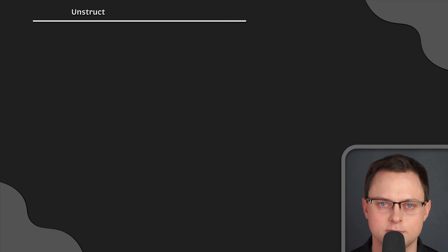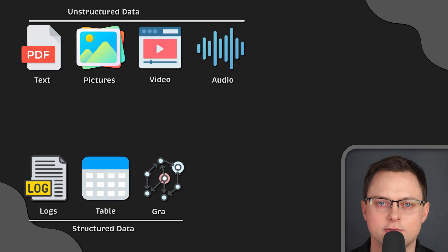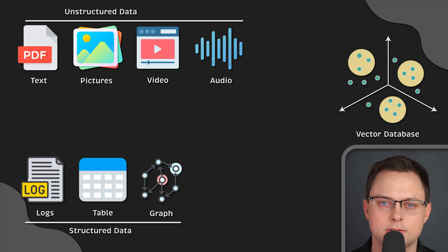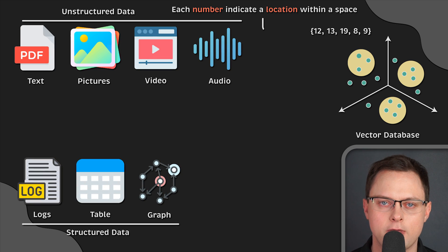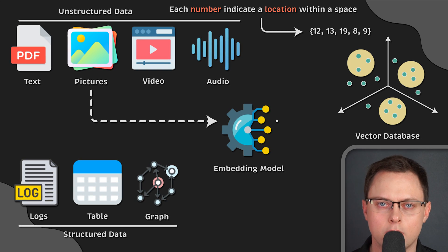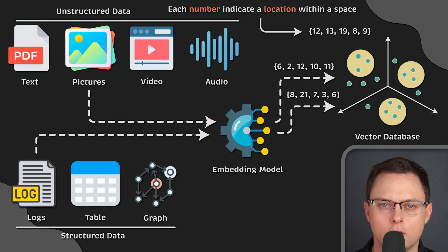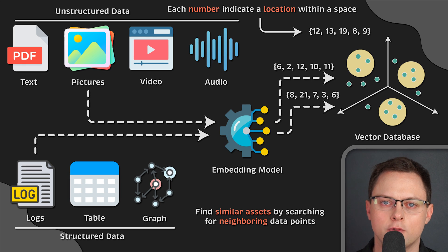Information comes in many forms — some is unstructured like text documents, pictures, videos, and audio, while some is structured like application logs, tables, and graphs. On the other side, we have vector databases that store data as high-dimensional vectors. Each vector has a certain number of dimensions ranging from tens to thousands, depending on the complexity of the data. We can apply transformations to raw data and encode all types of data into vectors that capture the meaning and context of the asset. This allows us to find similar assets by searching for neighboring data points.